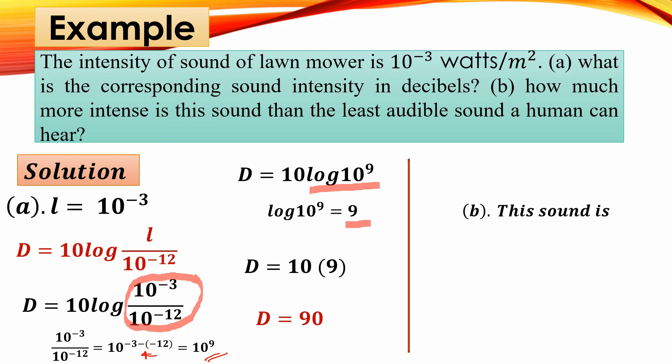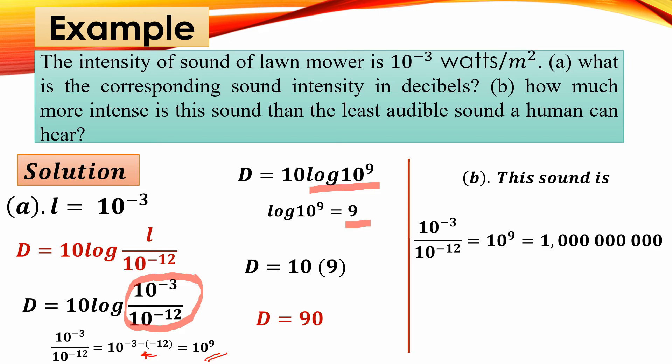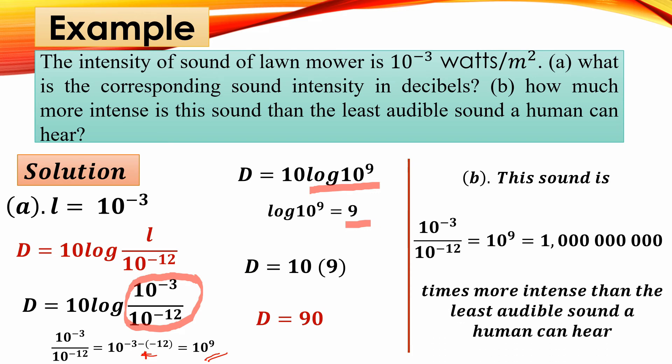For part B — how much more intense is the sound than the least audible sound a human can hear? We compute 10^(negative 3) divided by 10^(negative 12) equals 10^9, which equals 1 billion. So this sound is 1 billion times more intense than the least audible sound a human can hear.